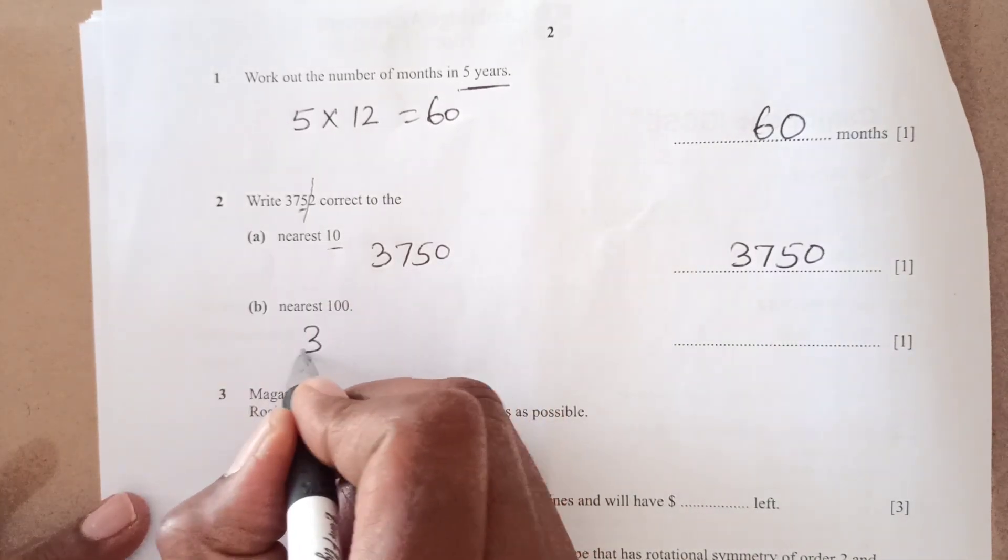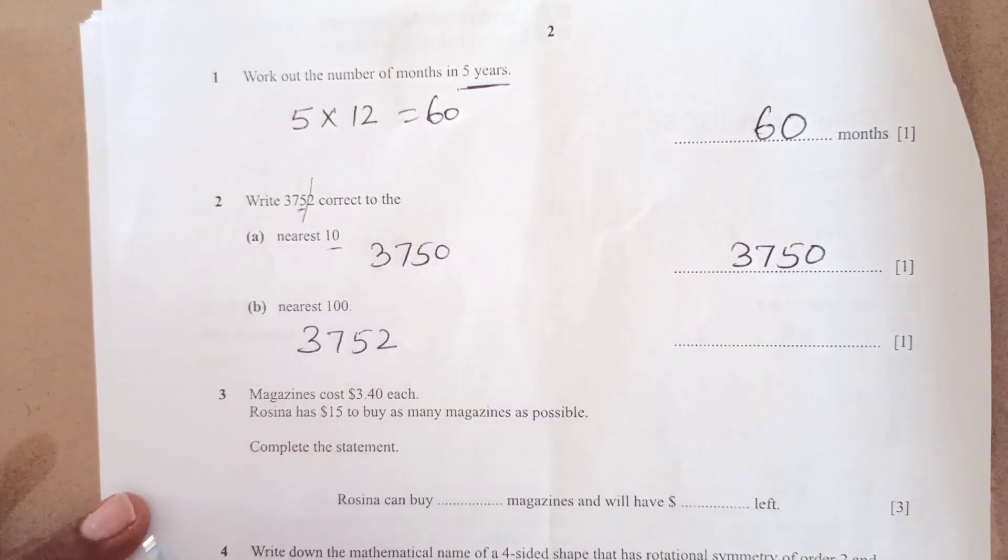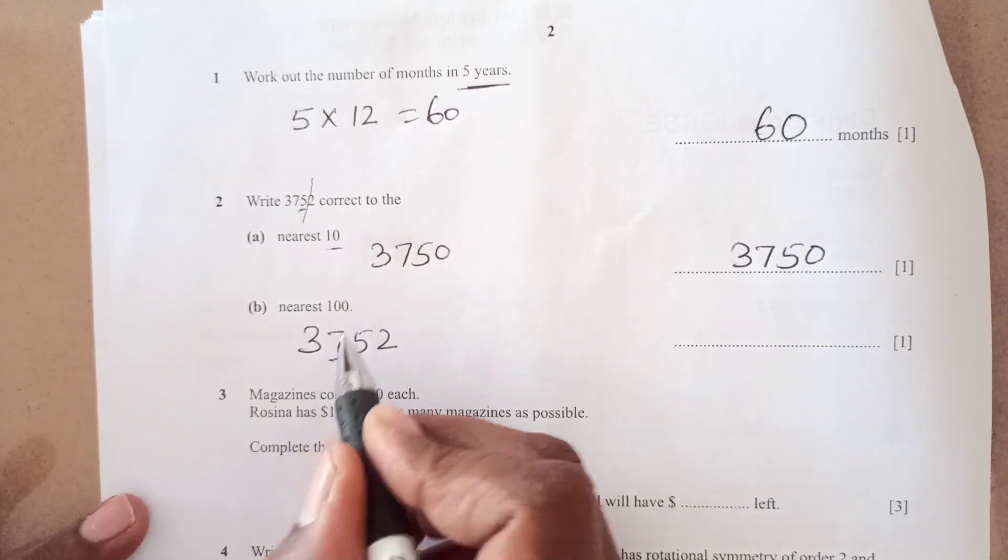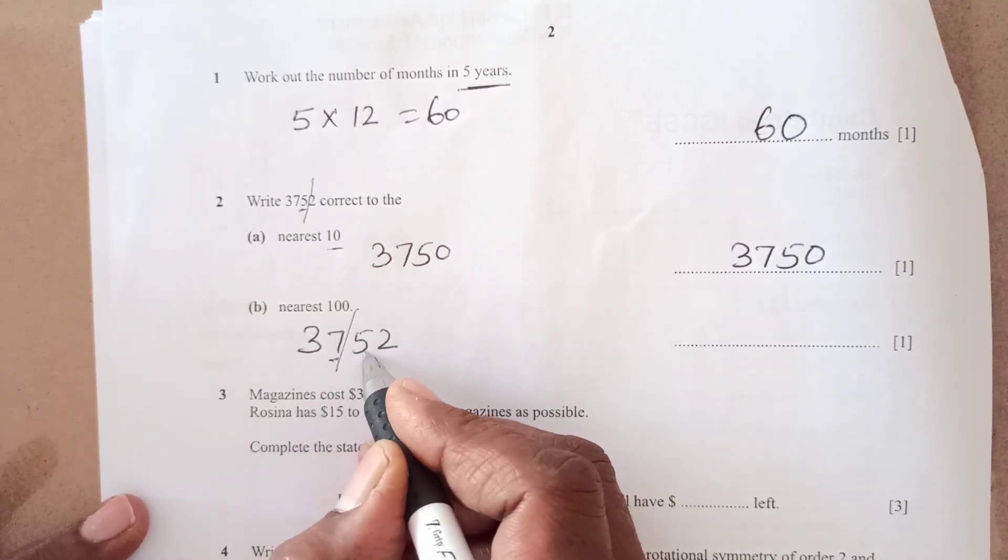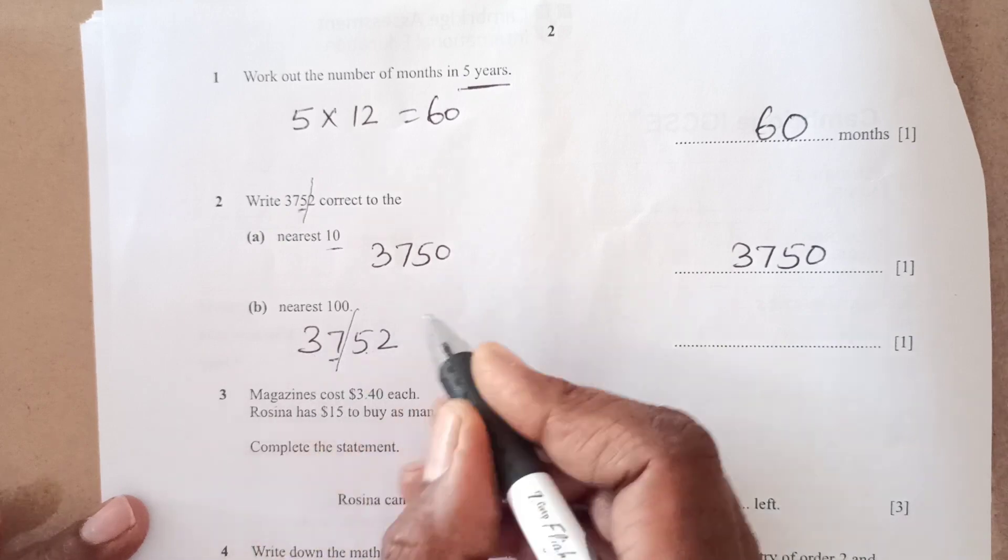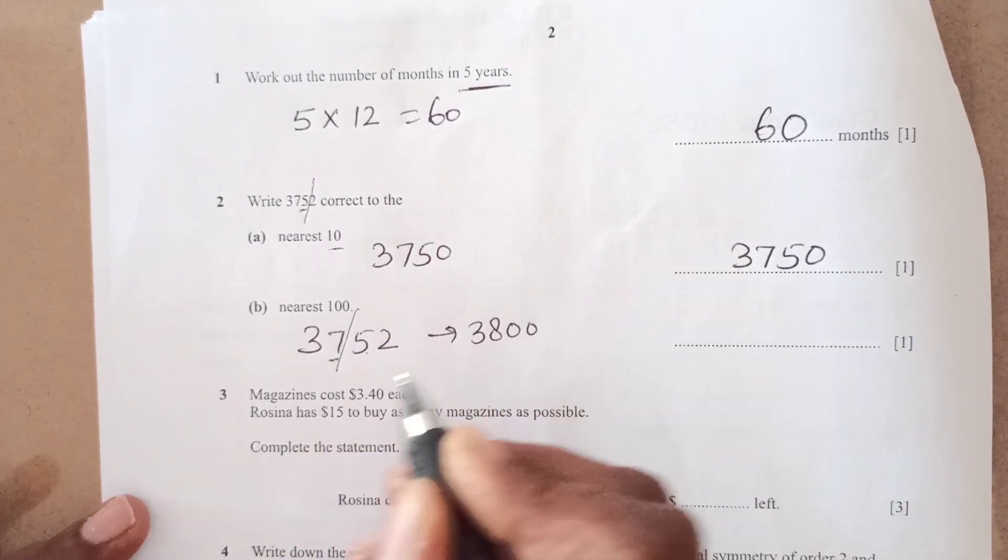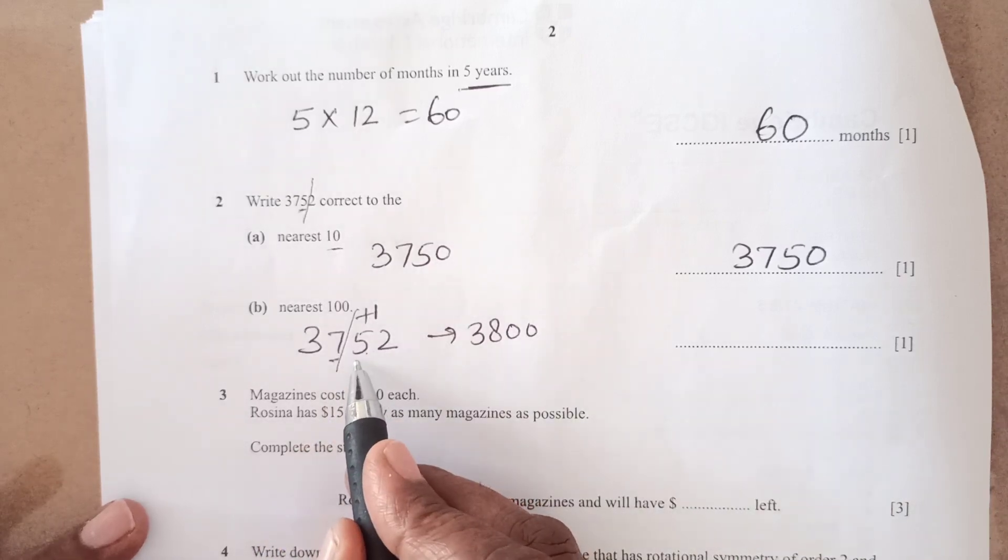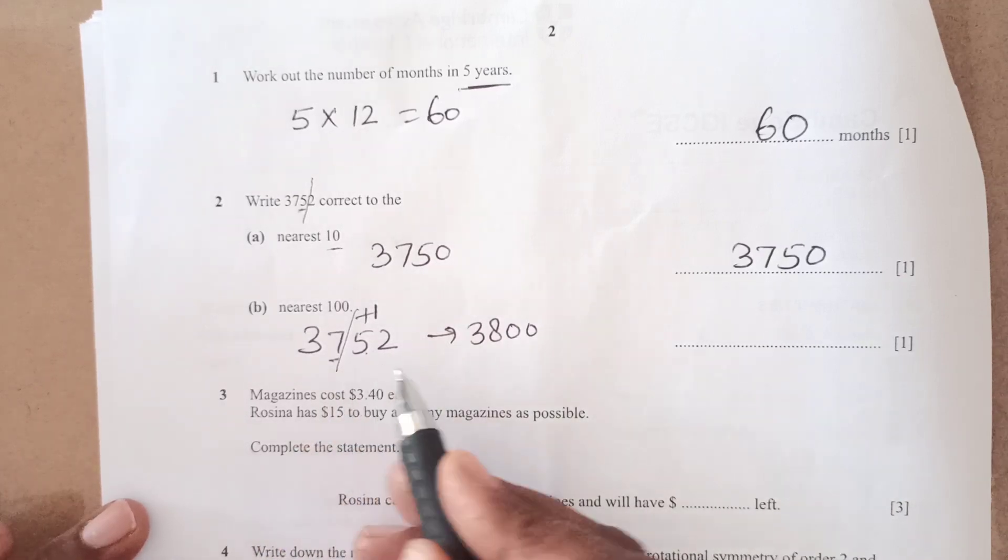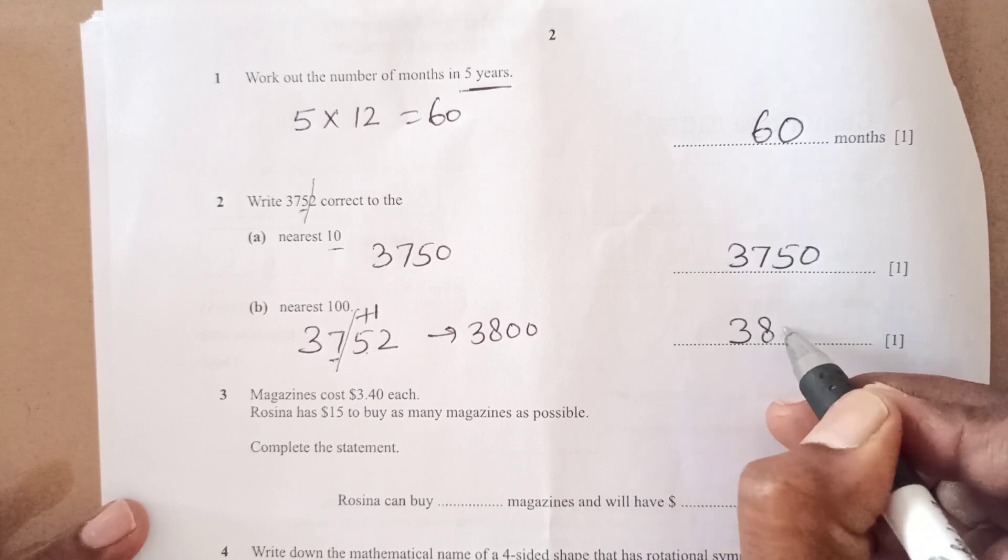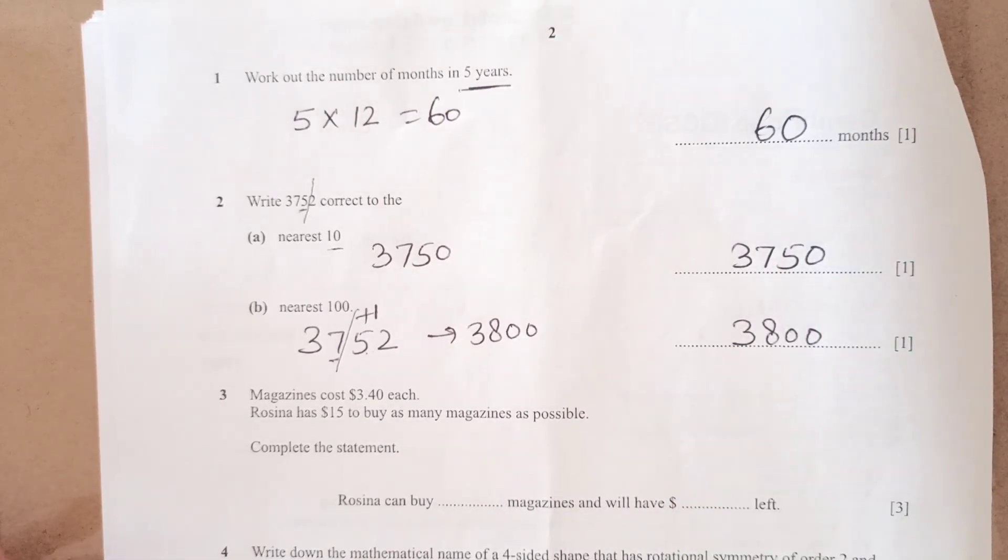Now, to the nearest 100, again this is the original number 100, 1 tenth, 100th place. The next place to this is 5. So then this should be 3,800 because this is going to round up because this is 5, 5 and greater we are rounding up. So final answer is 3,800.